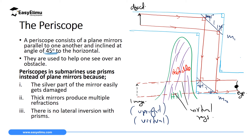Periscopes are mostly used by submarines to observe incoming ships, especially enemy vessels, and objects moving on the water surface. Submarine periscopes often do not use plane mirrors, since plane mirrors are made by painting the back of a glass surface and can get easily damaged. Instead, we use prisms, which rely on total internal reflection — an idea we will discuss in Form 3 on refraction.